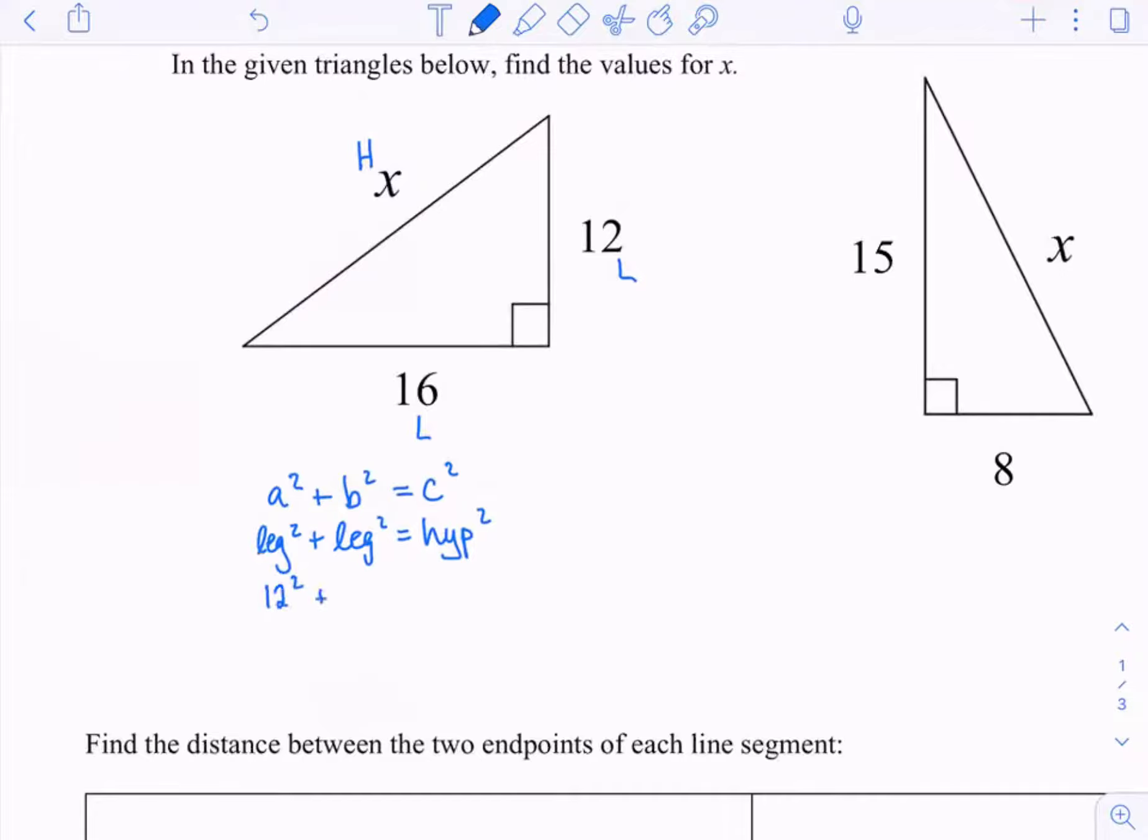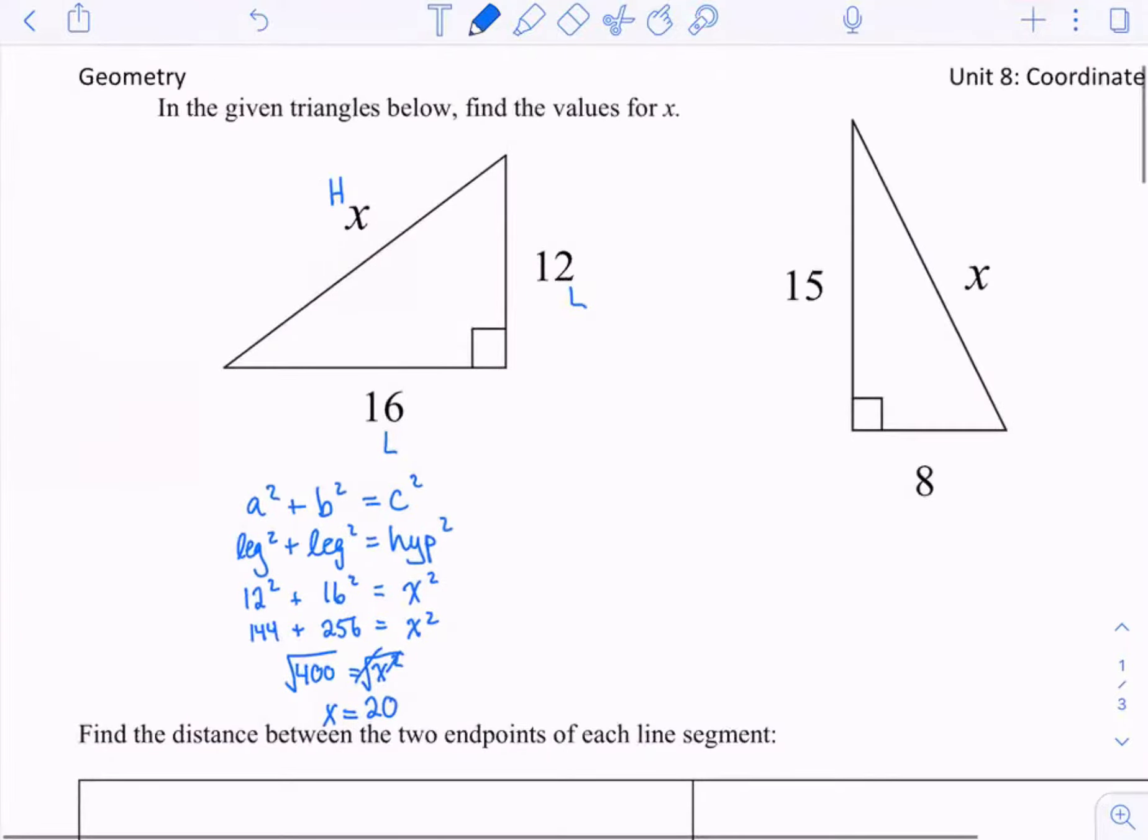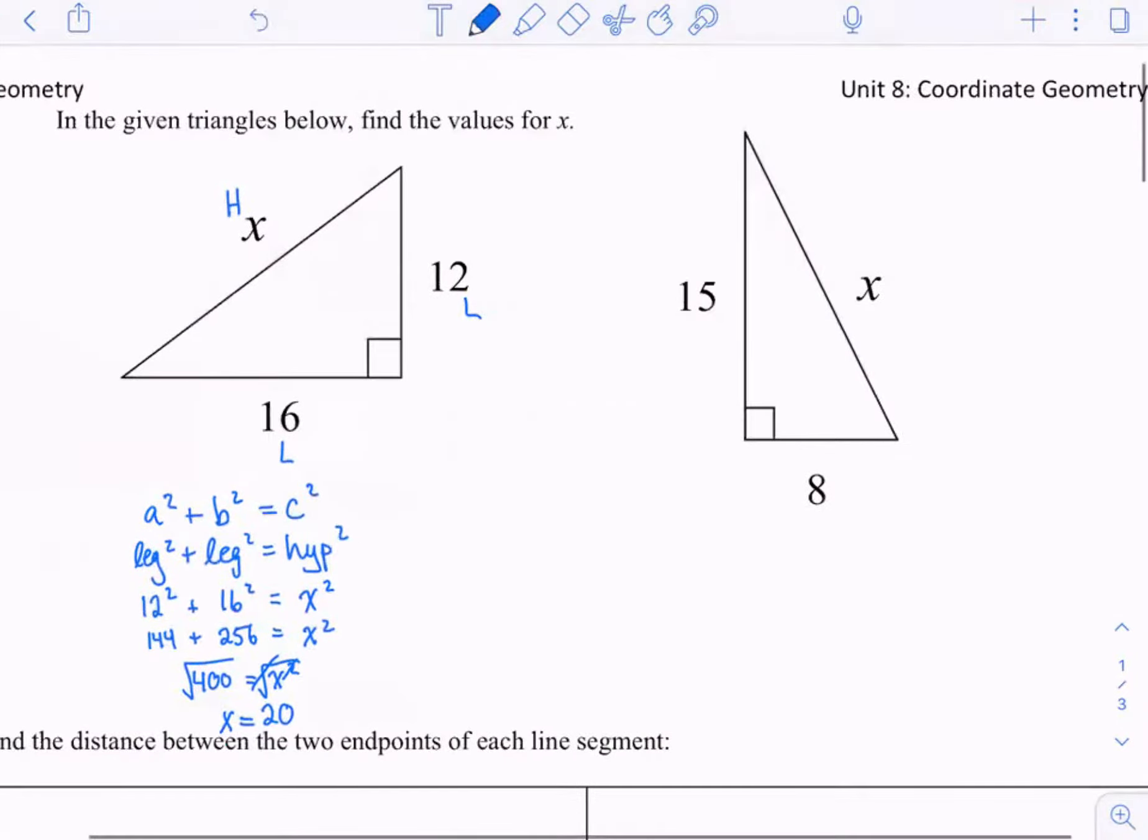So if I substitute 12 squared plus 16 squared equals x squared then you should be able to solve for x. So now 12 squared is 144 and 16 squared is 256 and then when you add them together you get 400 and then to solve for x I need to square root. Square root gets rid of the squared so x equals 20. So the square root of 400 is 20. So that's really the Pythagorean theorem. Most of you are familiar with that.